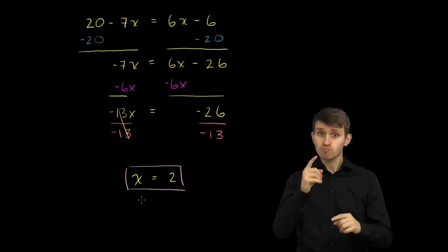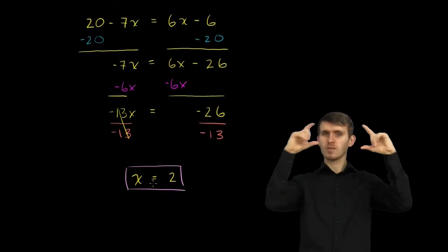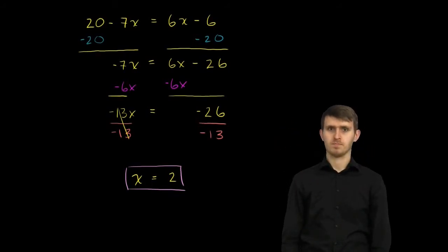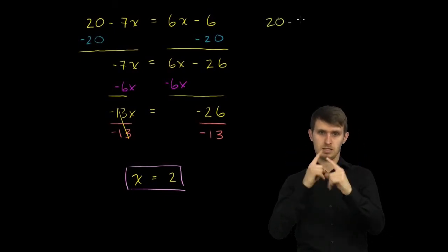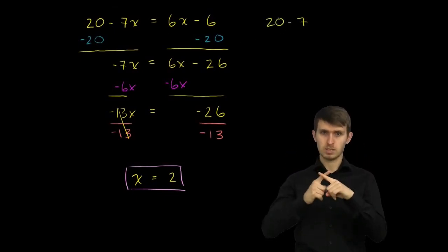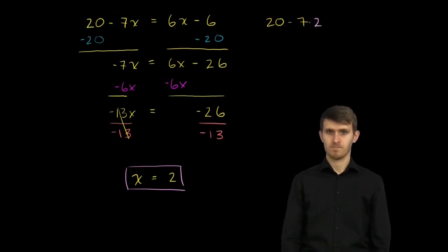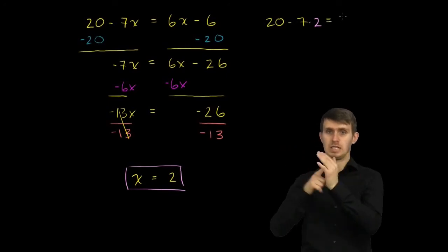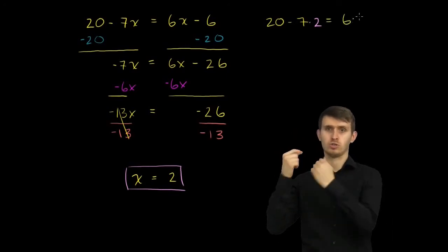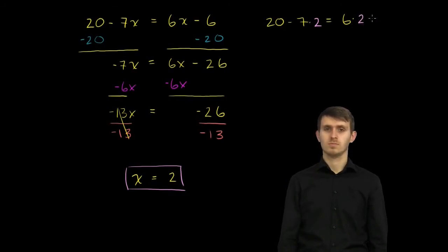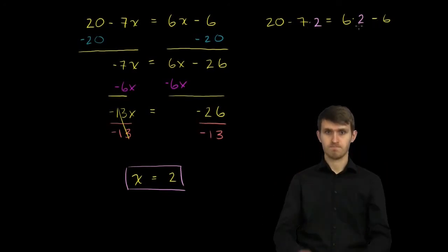Now let's verify that it really works. That's the fun thing about algebra. You can always make sure that you got the right answer. So let's substitute it back into the original equation. So we have 20 minus 7 times x. x is 2. Minus 7 times 2 is equal to 6 times x. We've solved for x. It is 2 minus 6.